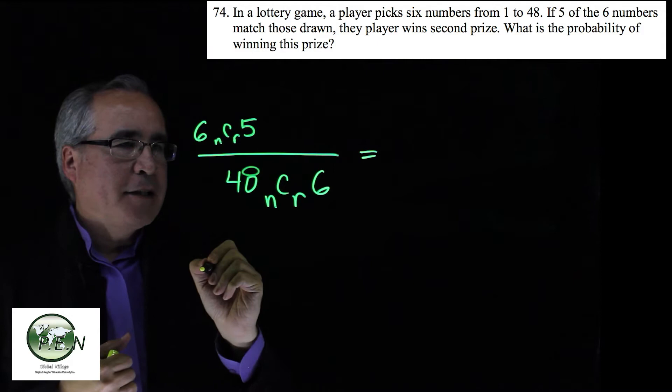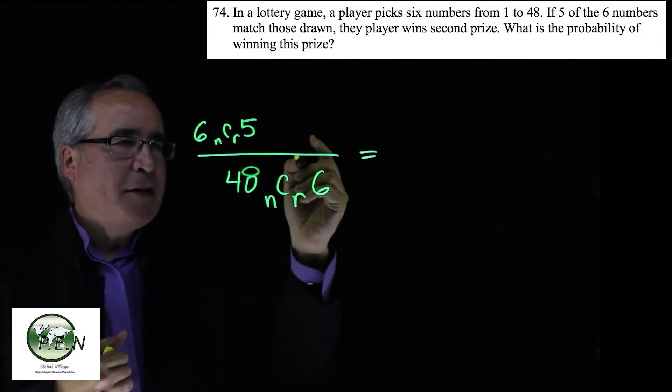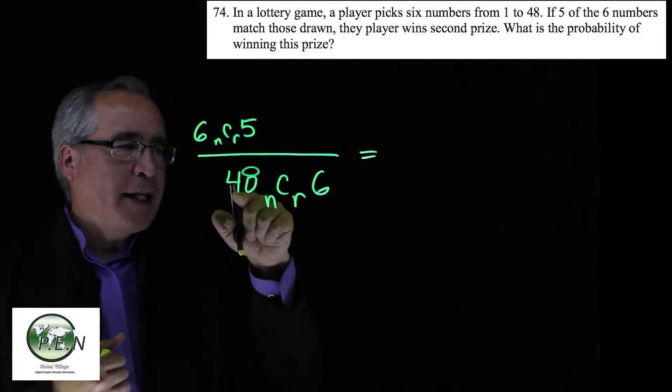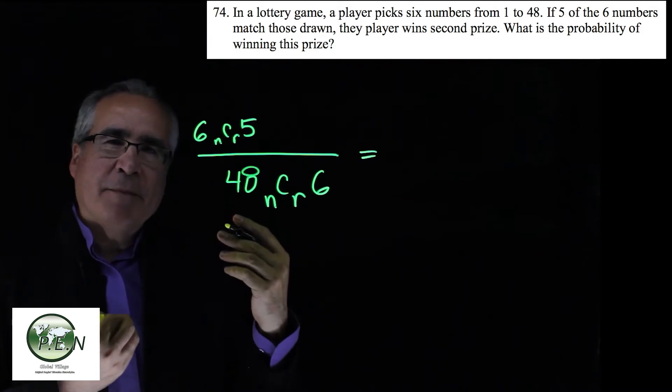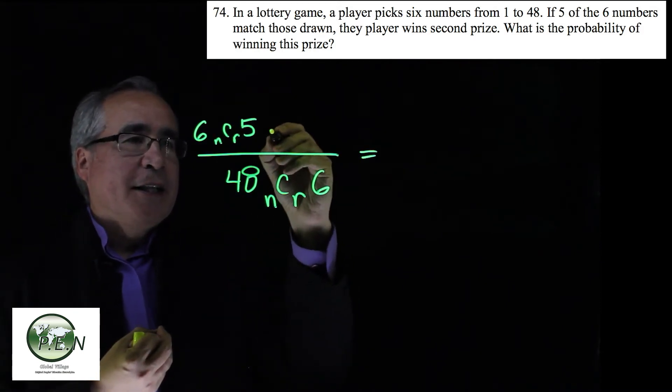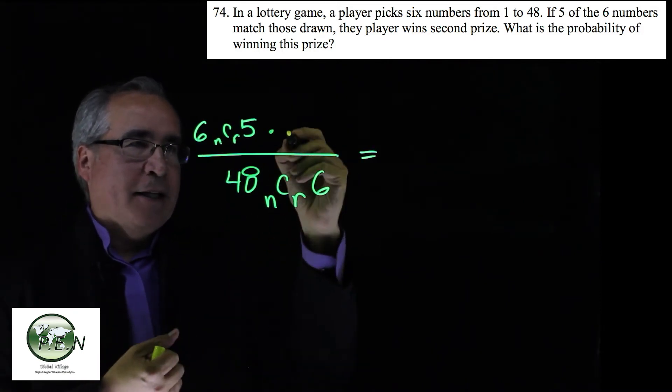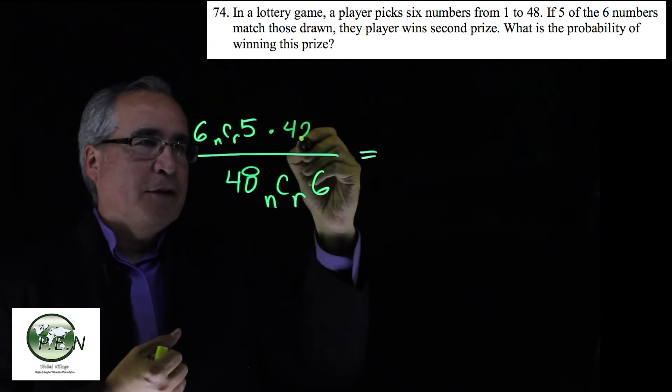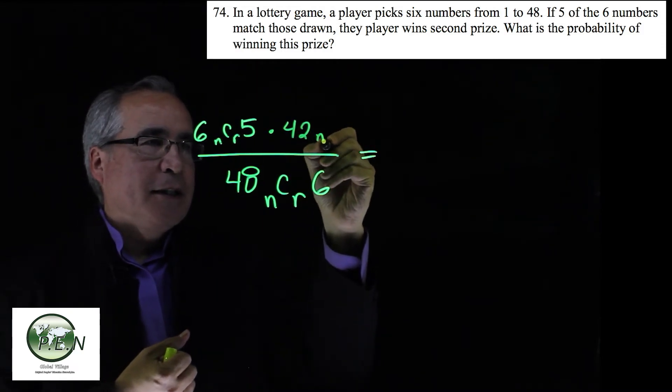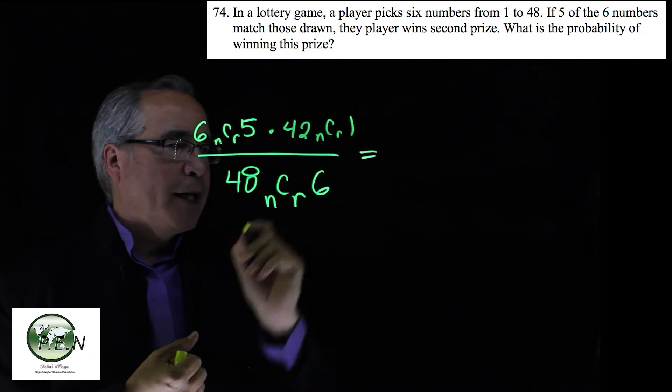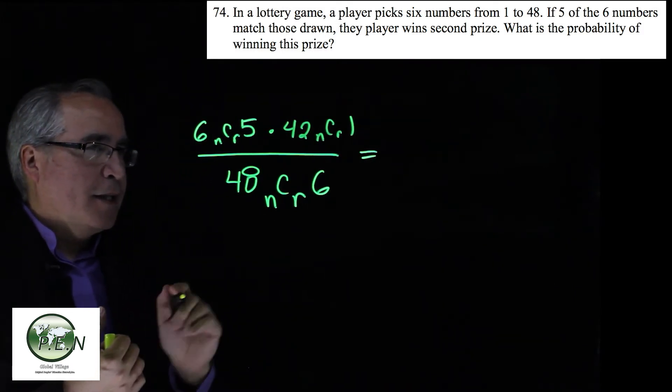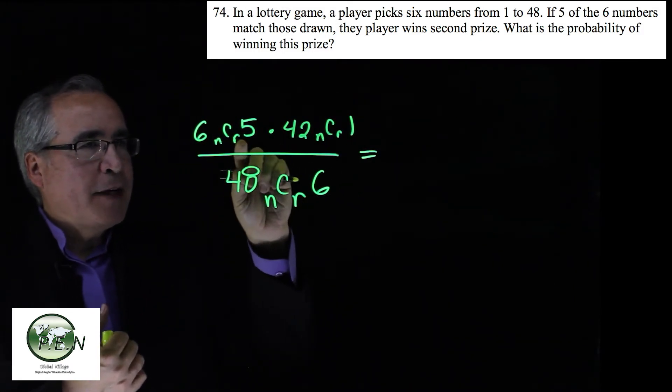Sorry, it should be 48, right? Not match the leftover. So six from 48 is 42. So there's 42 balls that didn't come out that are not here. So out of these 42, we want one. Okay, so we want one ball not to match, five balls to match.